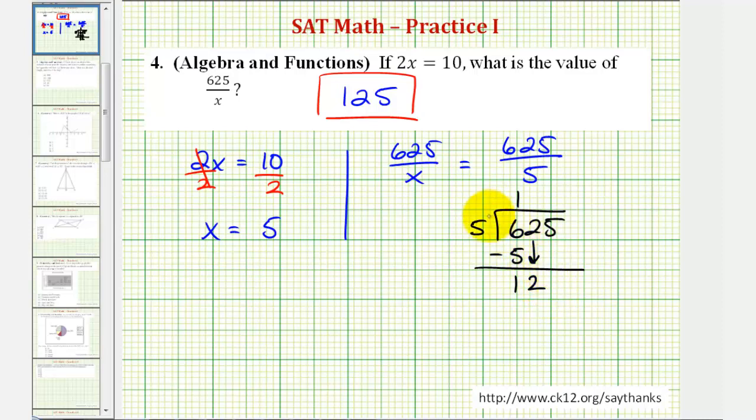So now we have 12. We want to know how many fives are in 12. That's two. Two times five is 10, and we subtract. Twelve minus 10 is two.